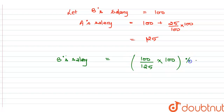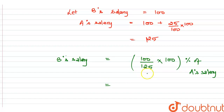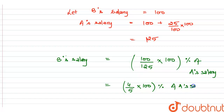So the percentage of B's salary with respect to A's salary: we have B's salary as 100 divided by A's salary 125, multiplied by 100. We simplify this — dividing by 25, we get 4 divided by 5, multiplied by 100.